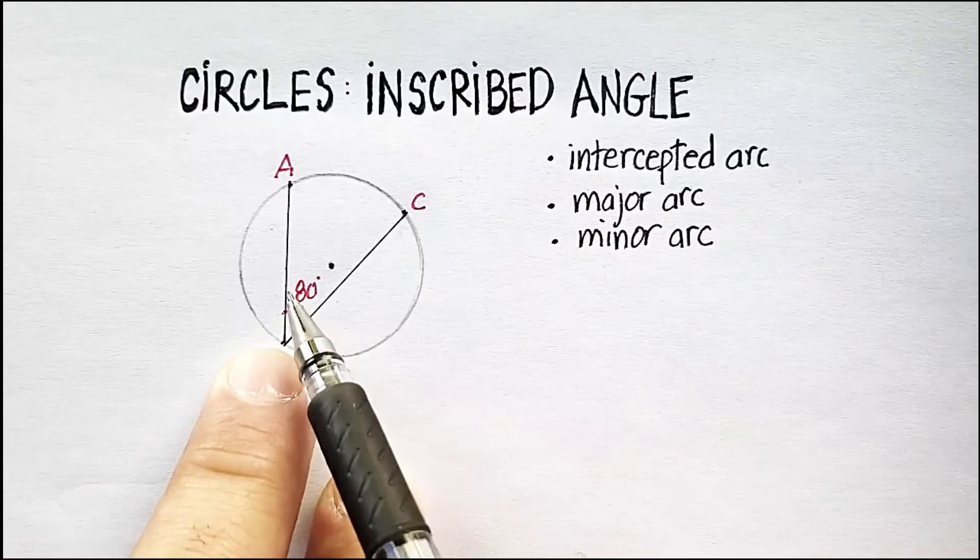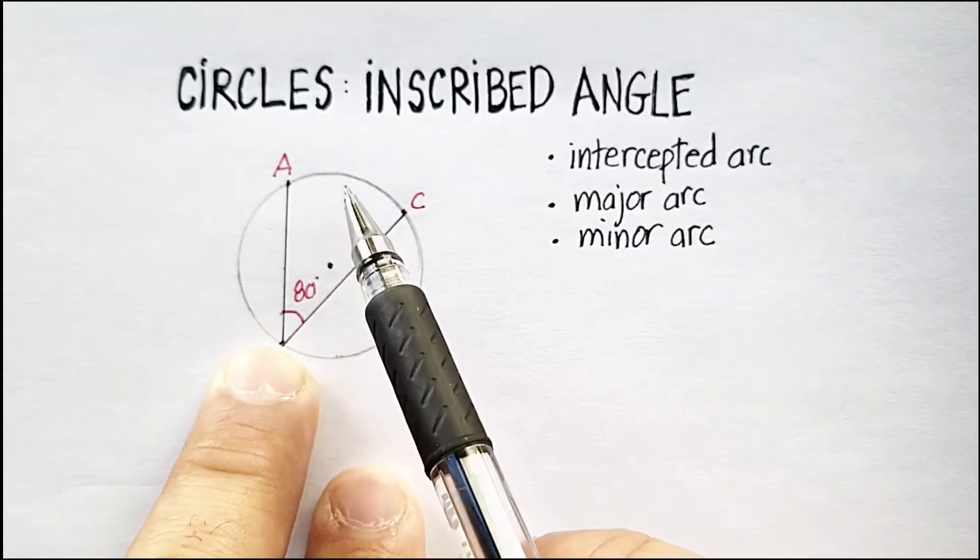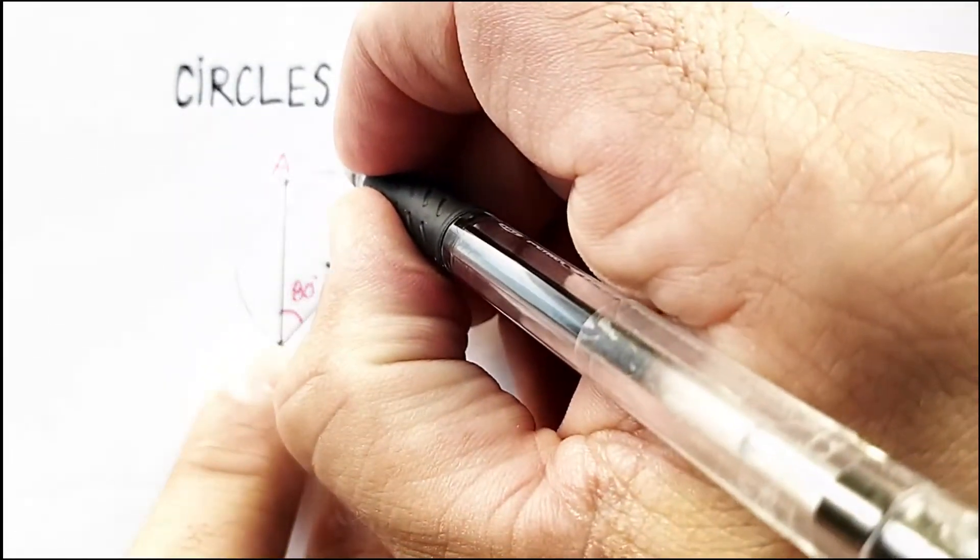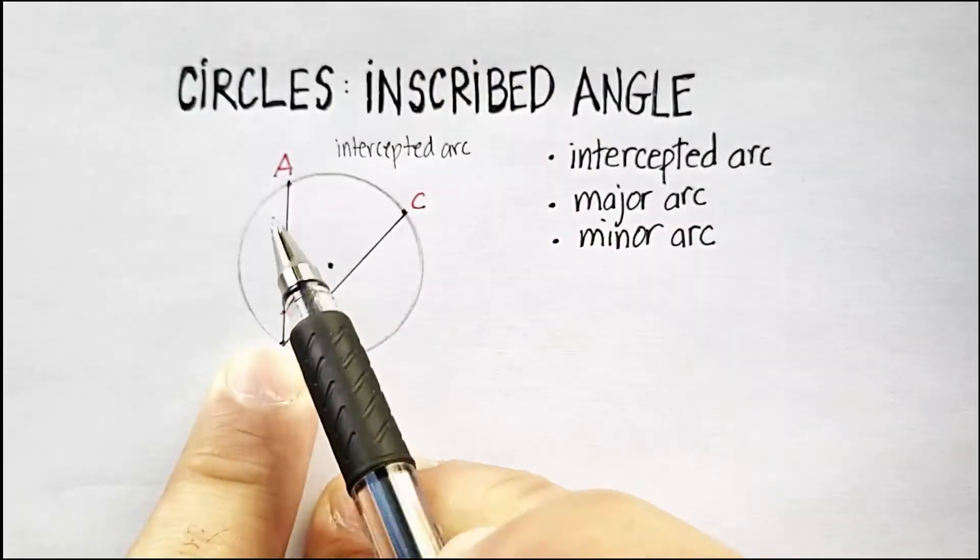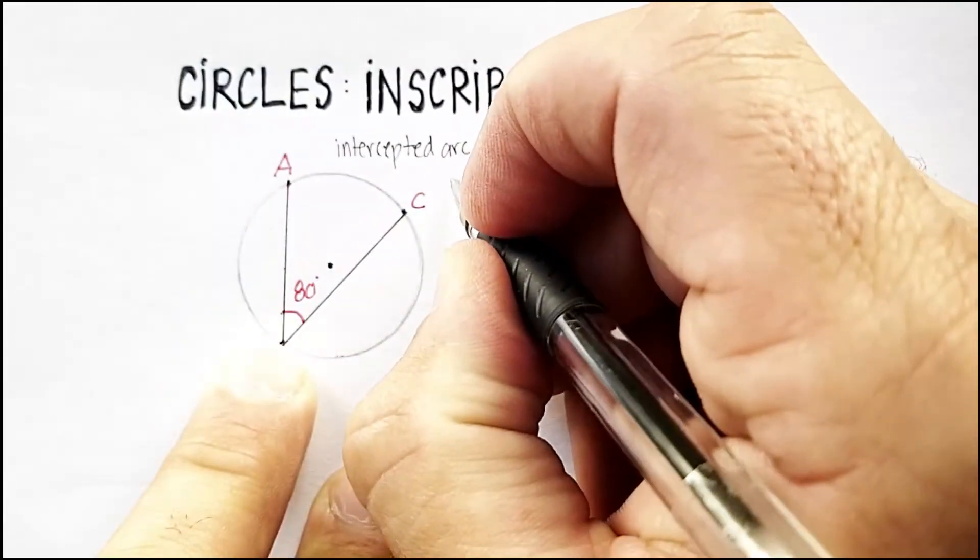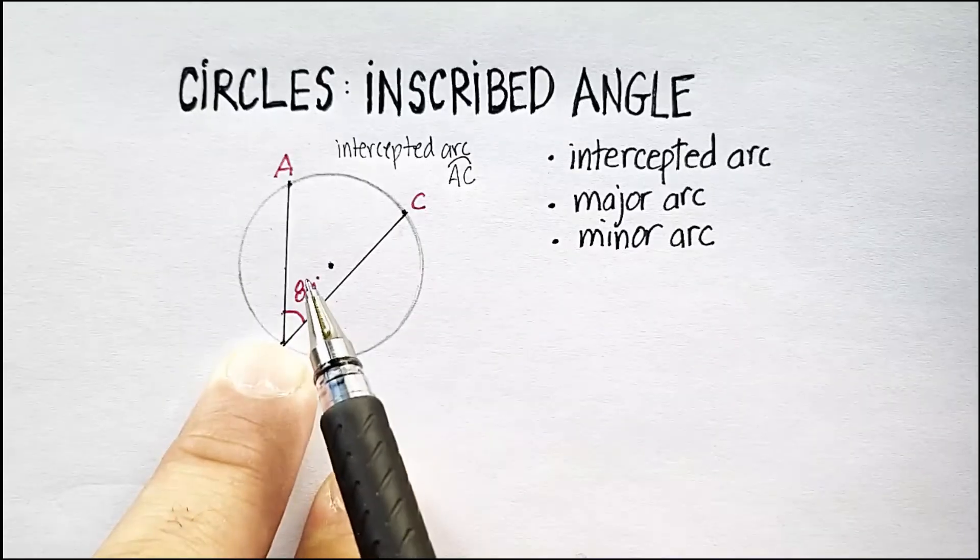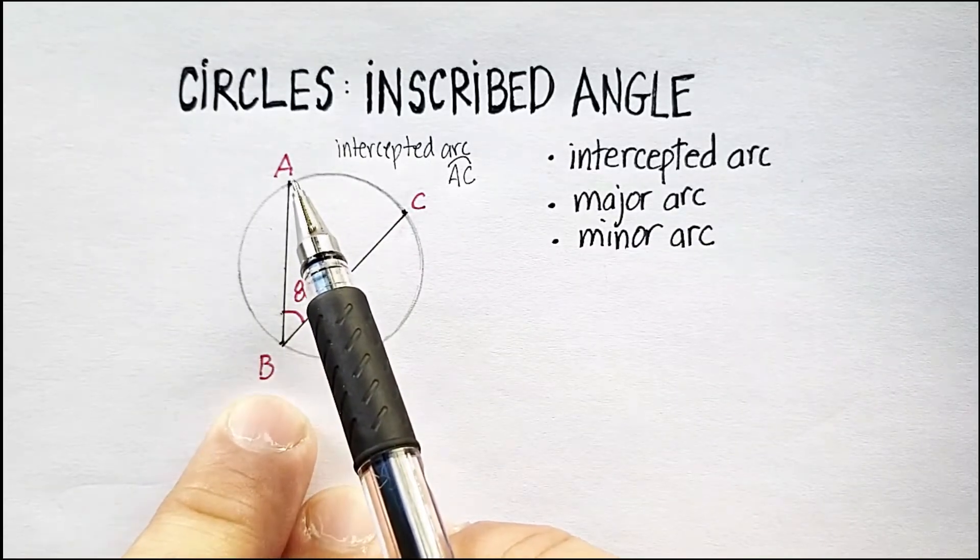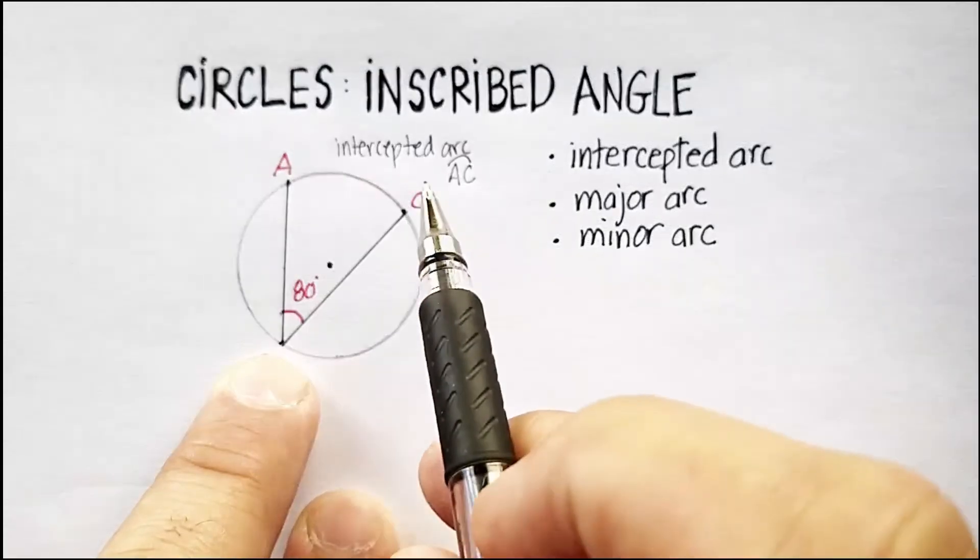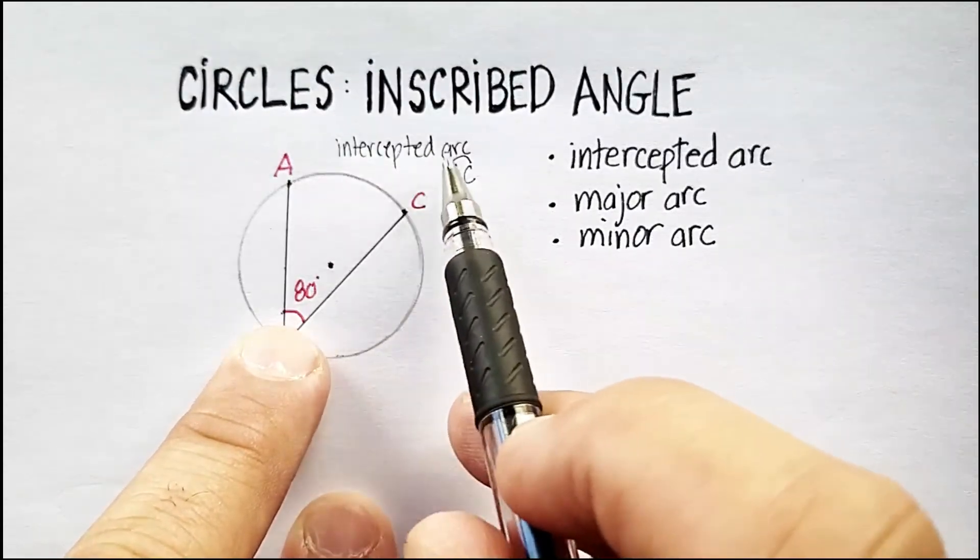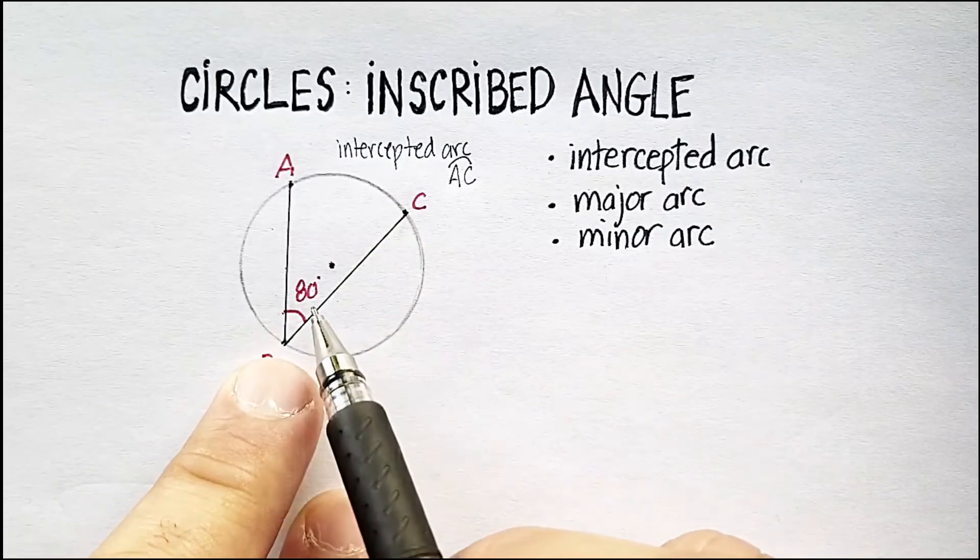So the question is this. What is the relationship between this angle, an inscribed angle, and the length of the arc that it defines? And that's what is called an intercepted arc. Intercepted arc. It's from A to C. And in this case, you would write AC with a little semicircle over the top of AC. The relationship is that the angle is half of the intercepted arc. Or, to say it another way, the intercepted arc is twice the angle.